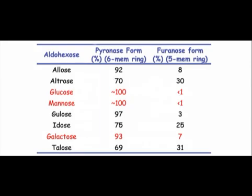This table shows you the relative amounts of furanose and pyranose form for a variety of sugars. Notice that in every case, the pyranose, or six-membered form, dominates. Why is this the case?